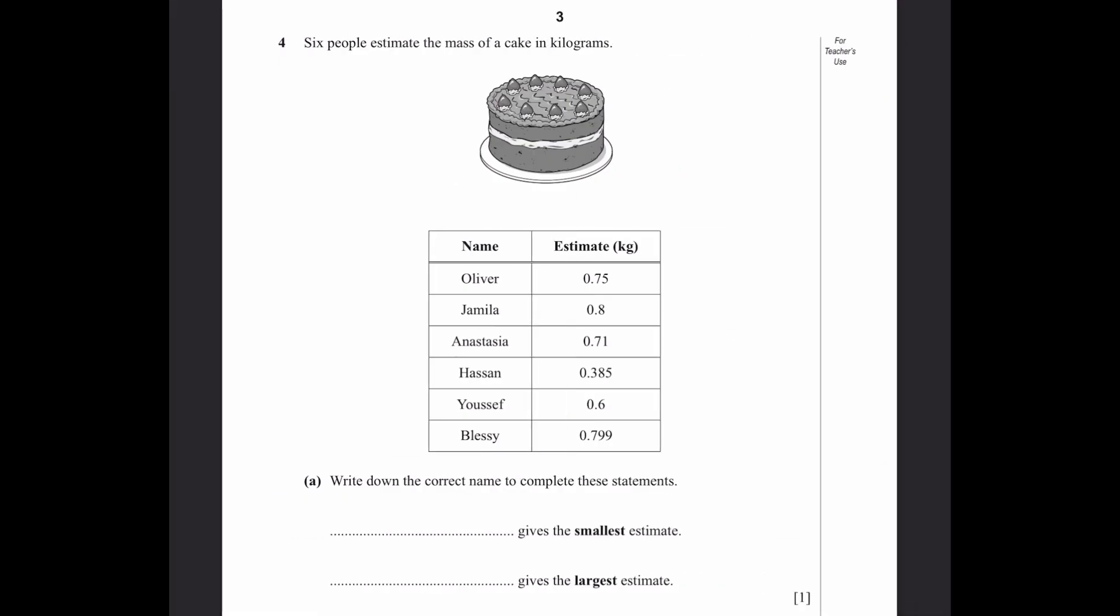Question 4. 6 people estimate the mass of a cake in kilograms. Write down the correct name to complete these statements. The smallest estimate - the smallest number here is 0.385, therefore Hassan gives the smallest one. And the largest estimate is given by Jamila because 0.8 is greater than all the others.